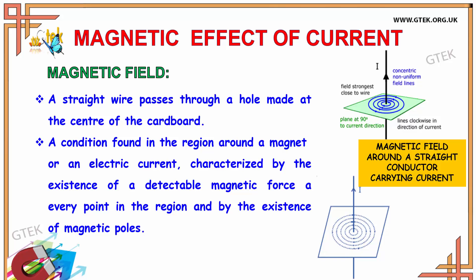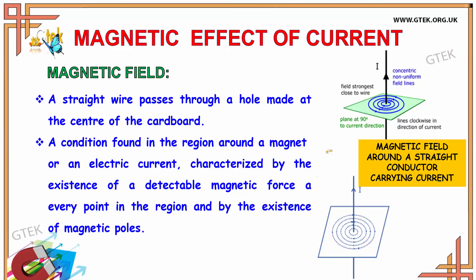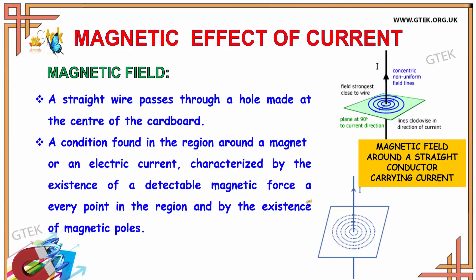What is magnetic field? A straight wire passes through a hole made at the center of the cardboard. A condition found in the region around a magnet or an electric current, characterized by the existence of a detectable magnetic force at every point in the region and by the existence of magnetic poles.